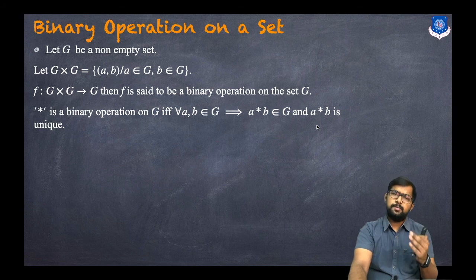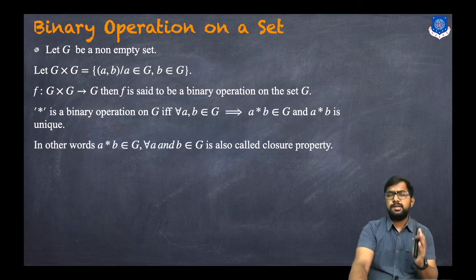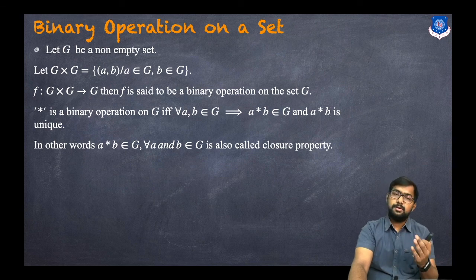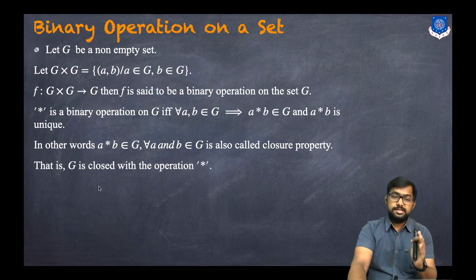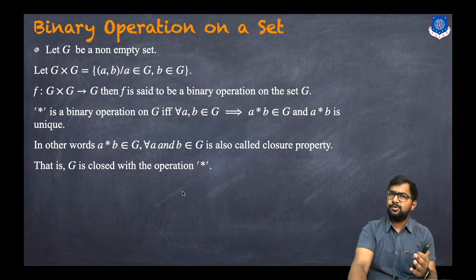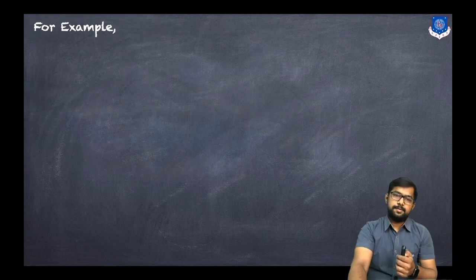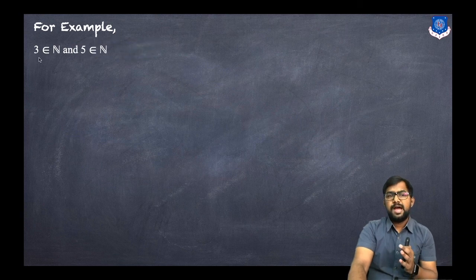So that means it is a closure property, and obviously a star b has to be unique. It is called a binary operation if a, b belongs to G implies a star b belongs to G and it is unique. In other words, G is closed under the operation star — this is called the closure property.